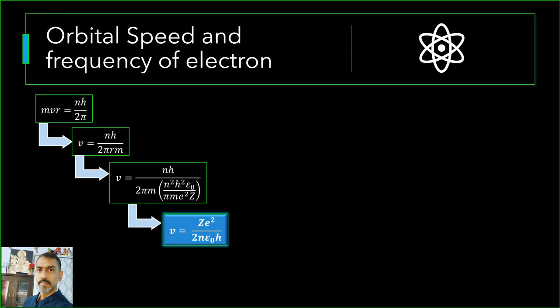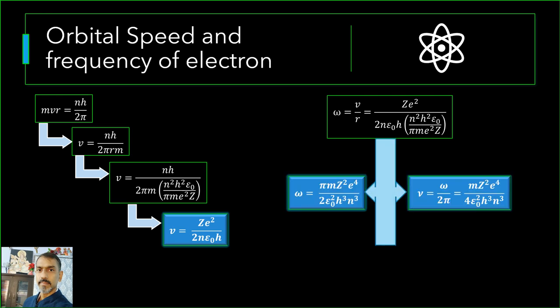Putting value of v and r, we get omega equal to πmz square e to the power 4 by 2 epsilon naught square h cube n cube. Further, frequency equals to omega by 2π. We obtain frequency equal to mz square e to the power 4 by 4 epsilon naught square h cube n cube.